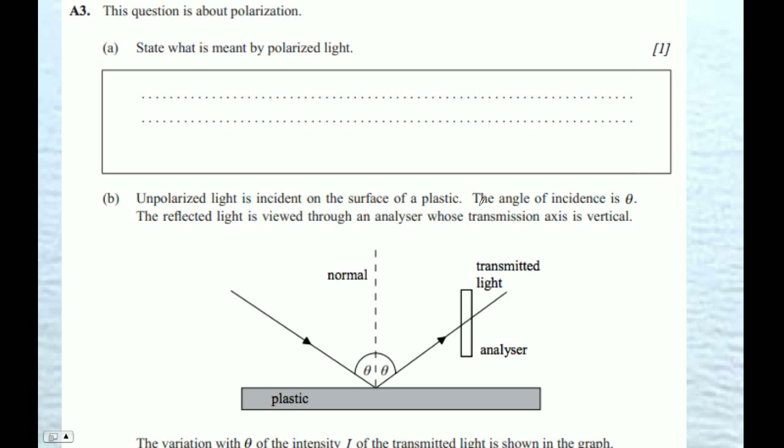So this question is about polarization. What is meant by polarized light? Well, polarized light is where all the electric fields all line up, and they're all, say, vertical or horizontal. And then B says, they may give a scenario here. So let's go look at that.